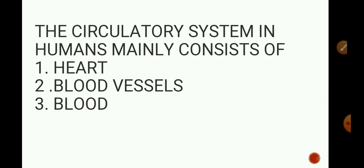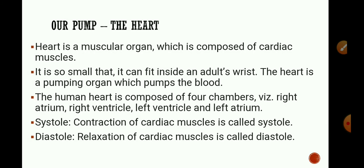The circulatory system in humans mainly consists of heart, blood vessels and blood. The heart is the most important organ of our circulatory system. It is a muscular organ located in the rib cage between two lungs. It is so small that it can fit inside an adult's wrist — the size of our fist.